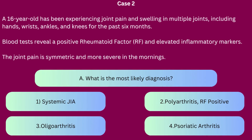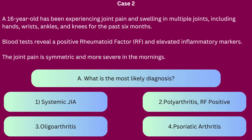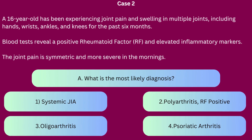Question A: What is the most likely diagnosis? 1. Systemic juvenile idiopathic arthritis, 2. Rheumatoid factor positive polyarthritis, 3. Oligoarthritis, 4. Psoriatic arthritis. The correct answer is 2 — polyarthritis, rheumatoid factor positive. The presence of arthritis in multiple joints, particularly the small joints of the hands and feet, along with a positive rheumatoid factor, strongly suggests RF-positive polyarthritis JIA. This type resembles adult rheumatoid arthritis and is marked by significant joint involvement and potential for joint damage if not adequately treated.